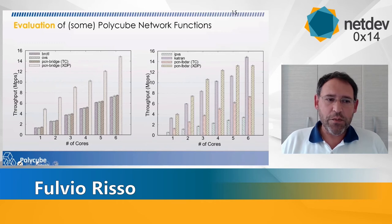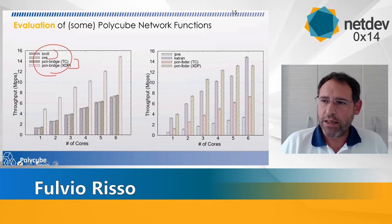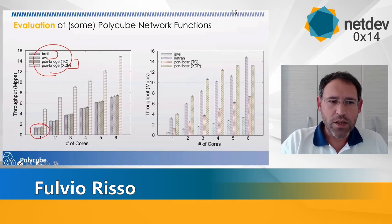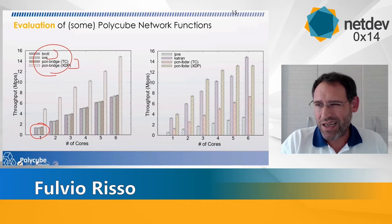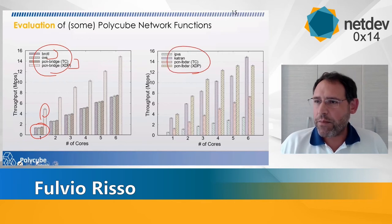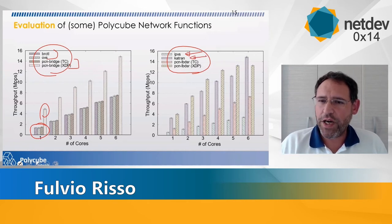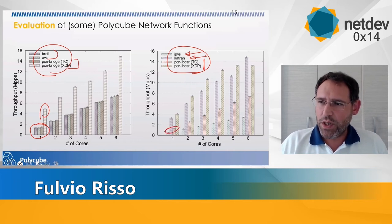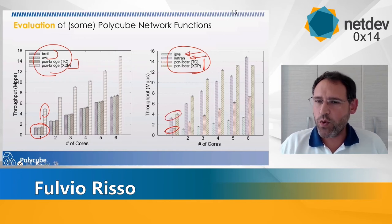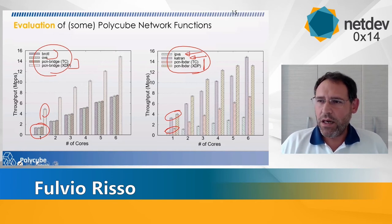Some numbers: we compared the bridge running in Polycube in two cases — TC mode and XDP mode — compared to traditional bridges like OVS and Linux Bridge. The performance of our bridge running in TC mode is similar, a little bit better, to the others. The bridge running in XDP mode is much higher. We also compared a load balancer: IPVS (standard in Linux), Katran (the eBPF load balancer from Facebook), and our load balancer running in TC and XDP. Running in TC, we're better than IPVS. Running in XDP, we're better than Katran. Our implementation is a proof of concept, but it shows we can go really fast.